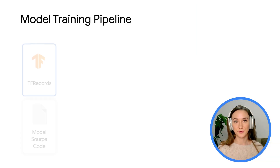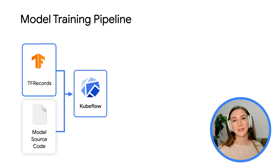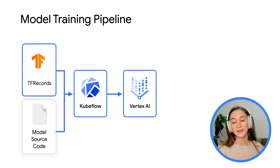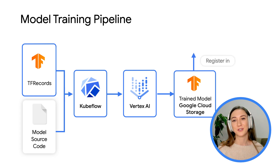Data preparation is still the biggest task within a machine learning pipeline, and it is the most demanding and resource-intensive part. Once you have the raw data processed into TF records, what happens then? There is another pipeline that also uses Kubeflow as an orchestrator. It takes TF records from Google Cloud Storage generated by the previous pipeline, and it takes the model source code, which is just a Python package. It runs in Vertex AI, and as output it generates a trained model in TensorFlow SavedModel format, which we put in Google Cloud Storage and register in model metadata storage.